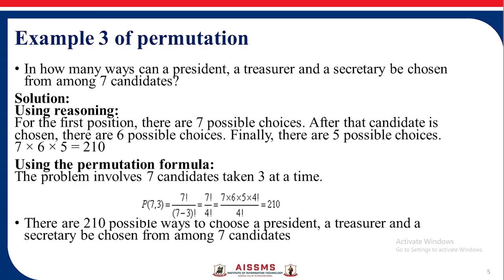Next example: In how many ways can a president, a treasurer, and a secretary be chosen from amongst 7 candidates? For the first position there are 7 possible choices, after that 6 possible ways, and finally 5 possible choices. So the answer is 7 into 6 into 5 = 210. The same problem can be solved using the permutation formula 7P3, which gives 7 factorial upon (7 minus 3) factorial = 210.